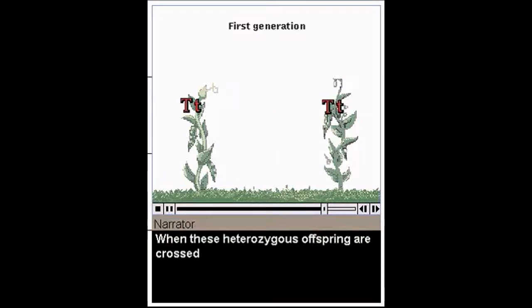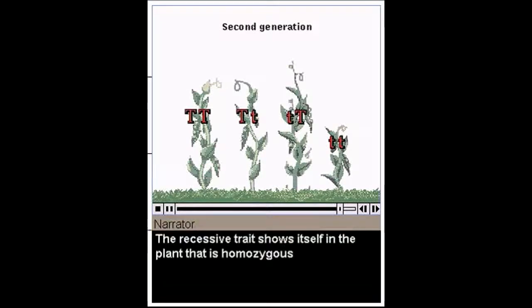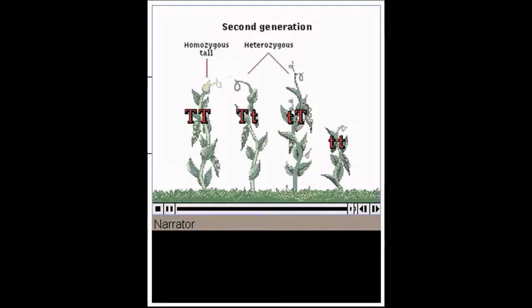When these heterozygous plants are crossed, three fourths of the offspring carry the dominant trait and appear tall. The recessive trait appears in the remaining one quarter of the offspring who receive two alleles for short. This type of simple inheritance is one of the many ways that traits are passed from parents to their offspring.